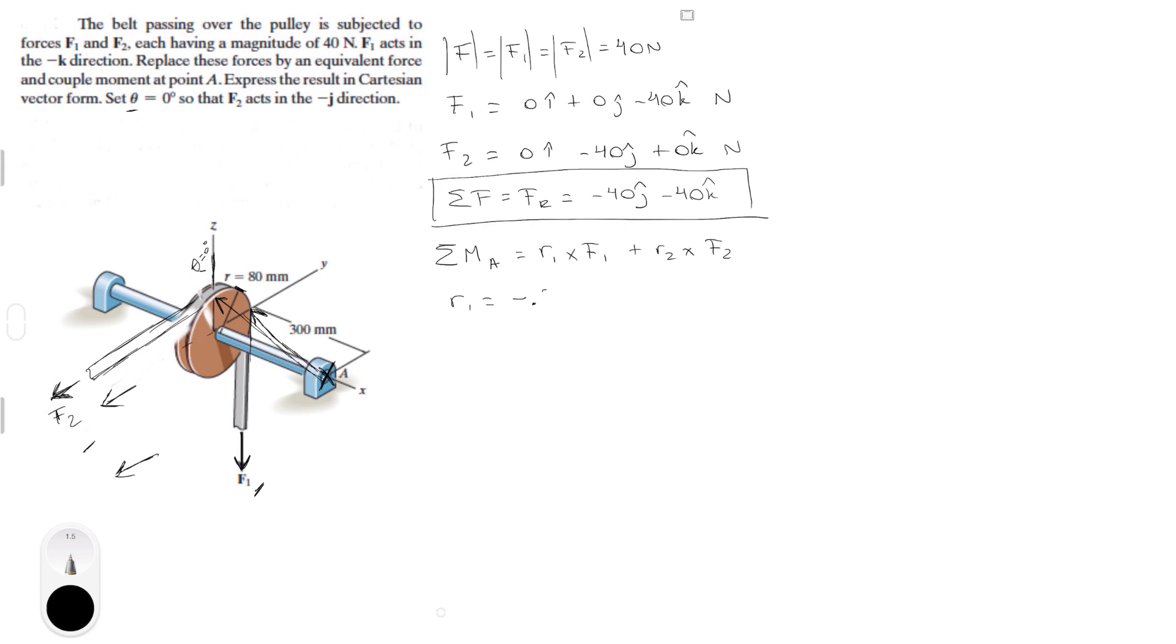R1 is equal to minus 0.3 in the i. Notice that I converted the 300 millimeters already into meters. You know that 300 millimeters is equal to 0.3 meters. Same thing for 80. Now this is a common mistake that I see, is 0.08 meters is equal to 80 millimeters. Don't put 0.8, that's a big mistake that I see all the time. Now as I was saying, R1 is negative 0.3 meters in the i, plus 0.08 in the j, plus 0 in the k. R2 is equal to minus 0.3 in the i, plus 0 in the j, plus 0.08 in the k.